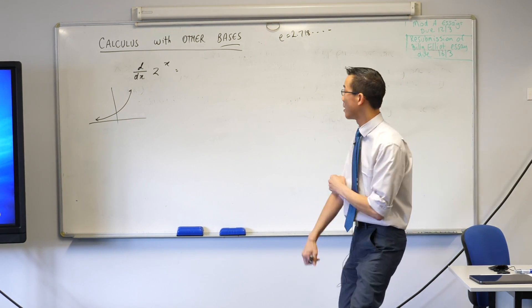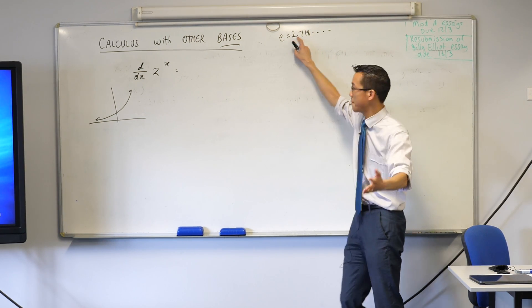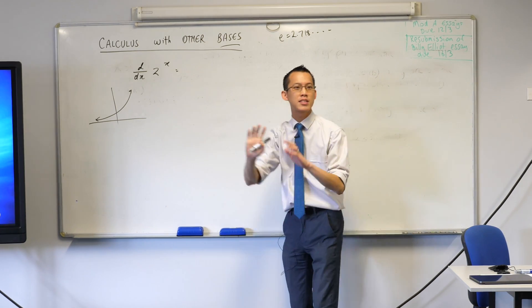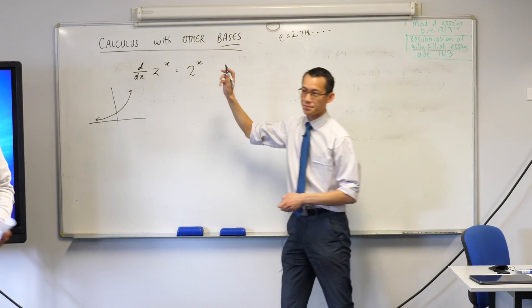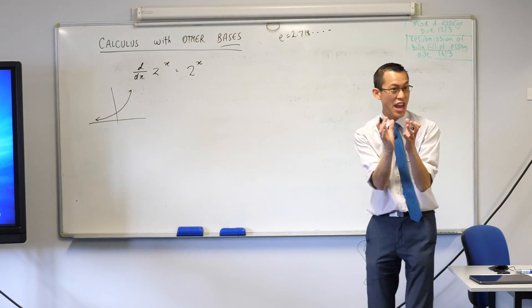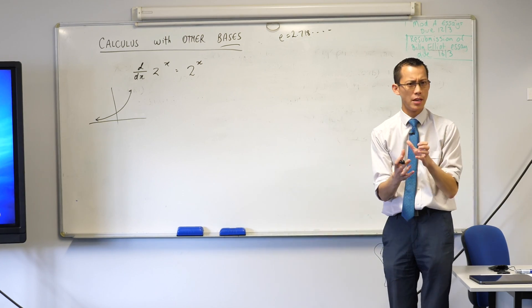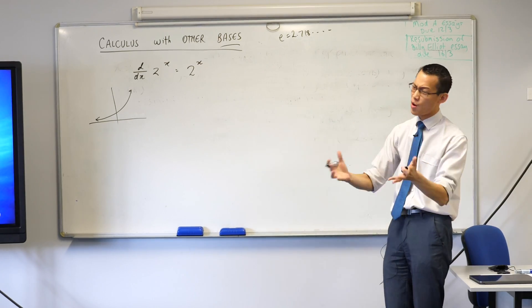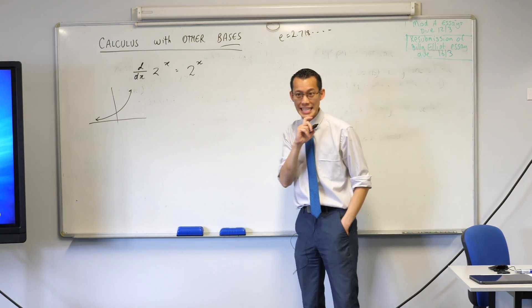So of course the classic example is e to the x. The derivative of e to the x is of course just e to the x, right? But when we have other bases, there's a slight adjustment we have to make.